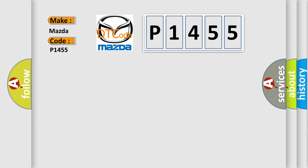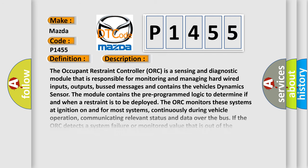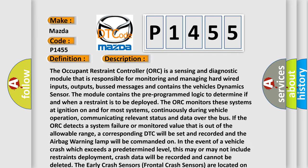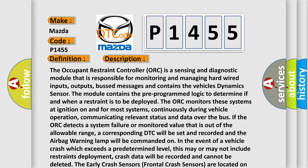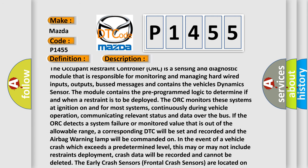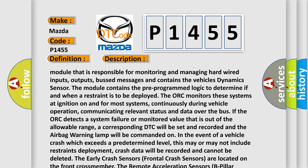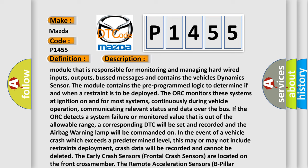The basic definition is: Front passenger airbag second stage, circuit short to ground. The occupant restraint controller (ORC) is a sensing and diagnostic module responsible for monitoring and managing hardwired inputs, outputs, bus messages, and contains the vehicle's dynamic sensor. The module contains pre-programmed logic to determine if and when a restraint is to be deployed.